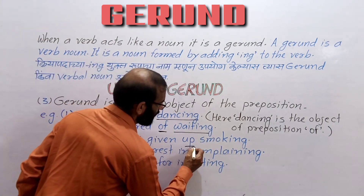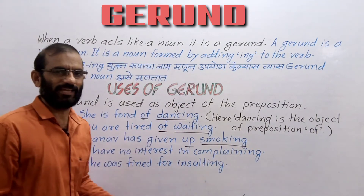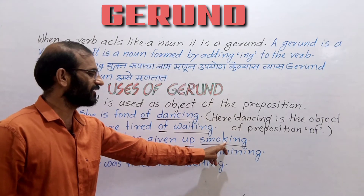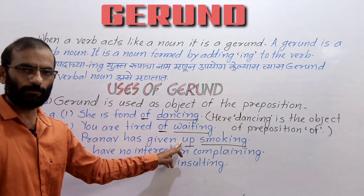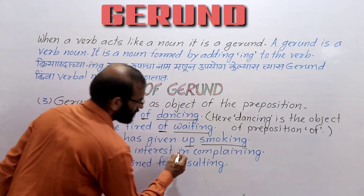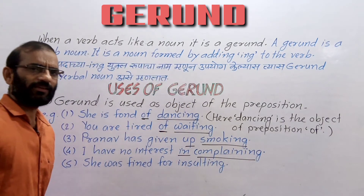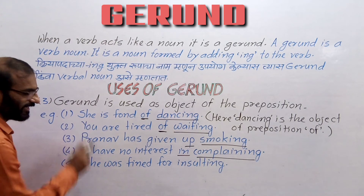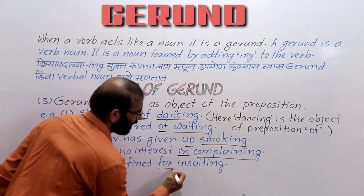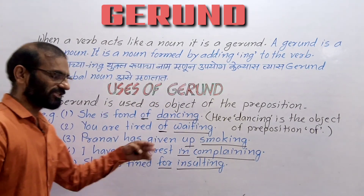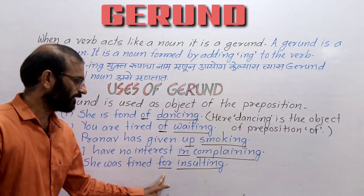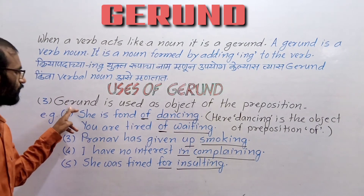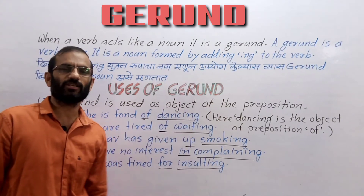'Pranav has given up smoking.' Here 'give up' means to stop or abandon something. Smoking is gerund and it is the object of the preposition 'up.' 'I have no interest in complaining' — complaining is gerund and it is the object of the preposition 'in.' 'She was fined for insulting' — for is the preposition and insulting is gerund, the object of the preposition 'for.' This is the third use of gerund.